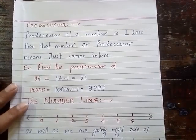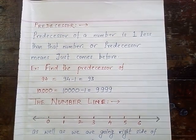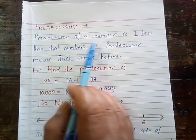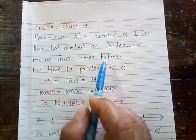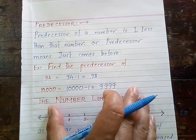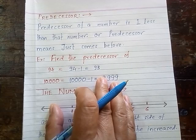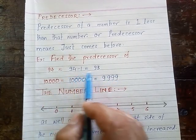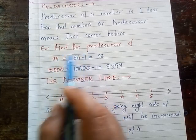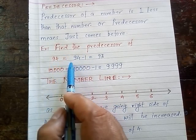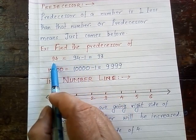Now let us discuss about predecessor. What do you mean by predecessor? Predecessor means just comes before. The predecessor of a number is one less than that number. Suppose you want to find out the predecessor of a given number — you will subtract 1 from the given number. For example, find the predecessor of 94. Subtract 1 from 94, then we will get 93. So 93 is the predecessor of 94.